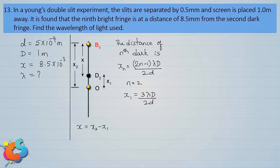For the nth bright fringe, the distance from the center is Xn equal to n lambda D by d. For the 9th bright fringe, the distance X2 equals 9 lambda D by d. Now we have X1 and X2, and the difference between these two is X.